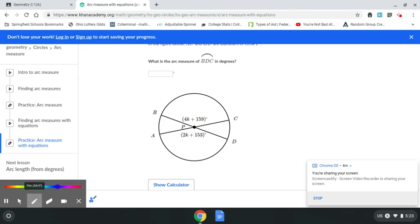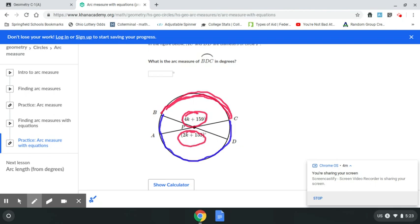So BDC is this right here. Start at B, go around to D, stop at C. BDC is everything but this arc right here. So if I find BC and then subtract from 360, I'll get my answer. Can't find BC until I find K. Can't find K until you set up an equation. Now if you notice, K appears here and here. Hopefully at this point in your mathematical careers, you know that those two angles are vertical angles and we know that vertical angles are congruent. So I've got to set 4K plus 159 equal to 2K plus 153.